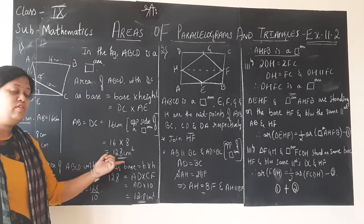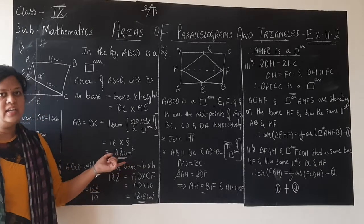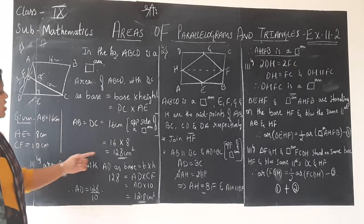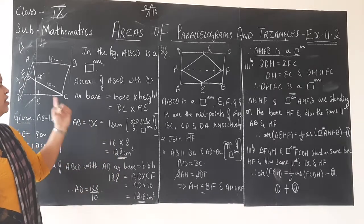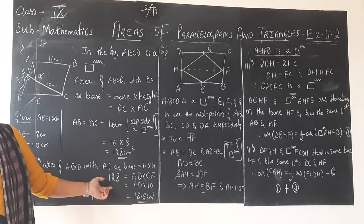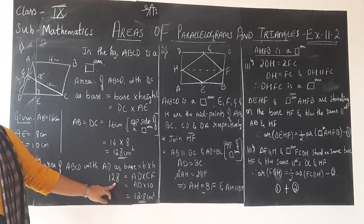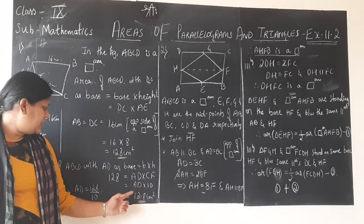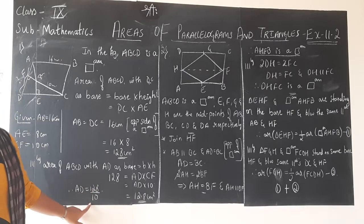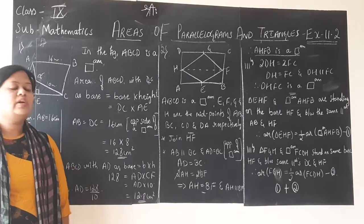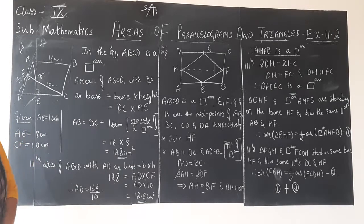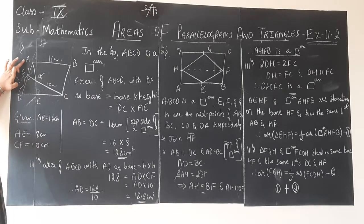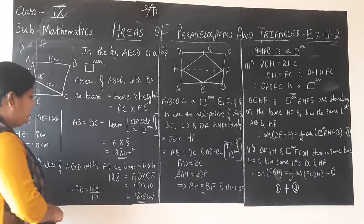Since we are considering the same parallelogram with a different base, its area remains the same — 128 cm². So we substitute: 128 = AD × 10. Therefore AD = 128 ÷ 10, which gives us 12.8 cm. Hence we got the measurement of side AD, which is equal to 12.8 cm.